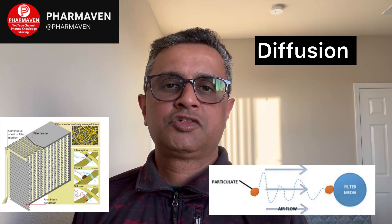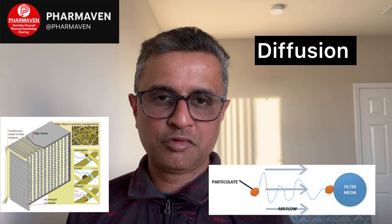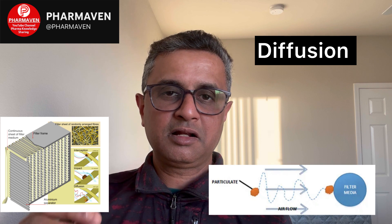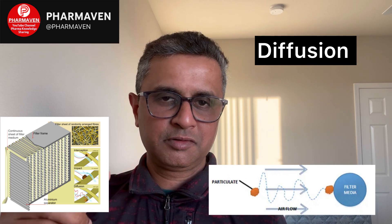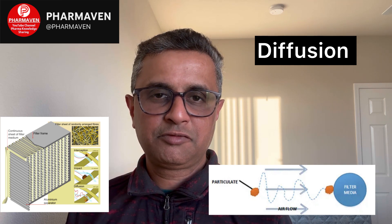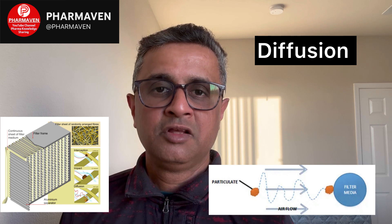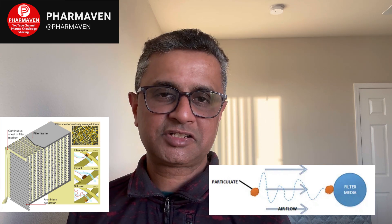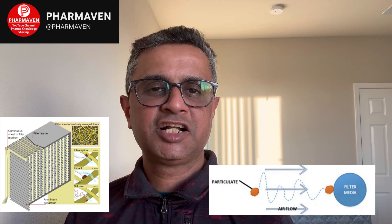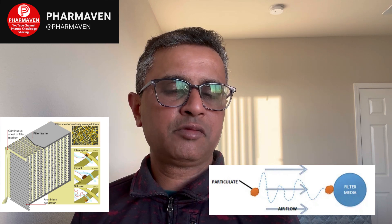The fourth mechanism is diffusion. Very small particles exhibit Brownian movement. To explain Brownian movement: if you add a drop of colored liquid to still water and don't stir it, after some time the color spreads throughout the entire water mass on its own. Each molecule has its own Brownian movement — continuous random motion — which causes the color particles to spread throughout the water volume. Small particles in air also have Brownian movement and keep moving.